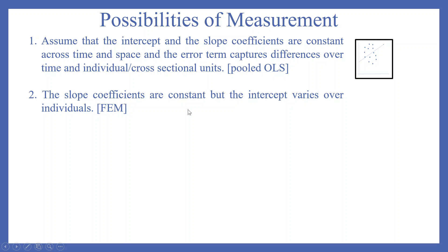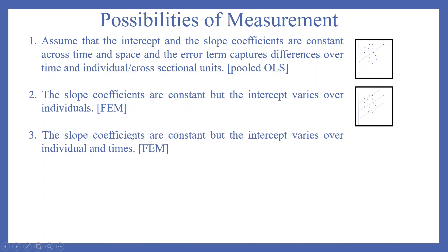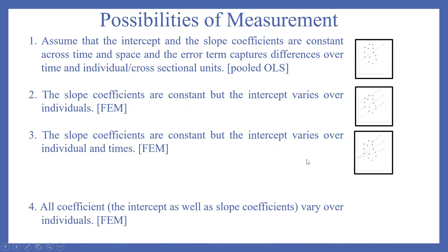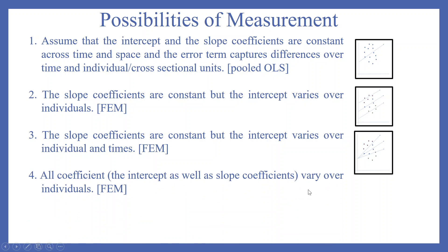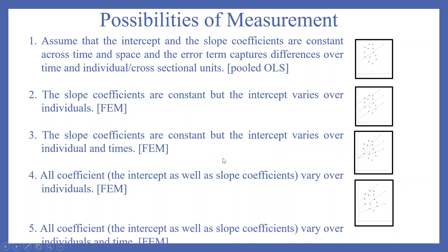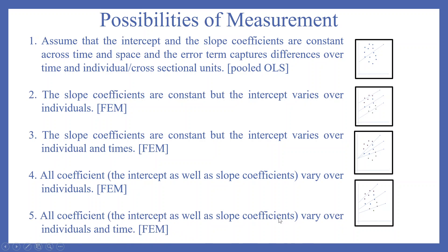The possibilities of panel data modelling include: the slope coefficients are constant but the intercept varies over individuals; the slope coefficients are constant but the intercept varies over individuals and time; and all coefficients vary over individuals and time.